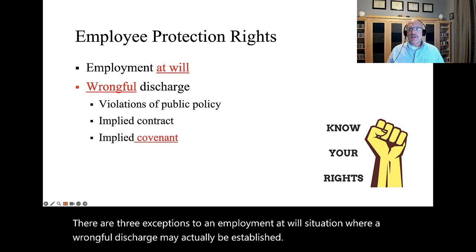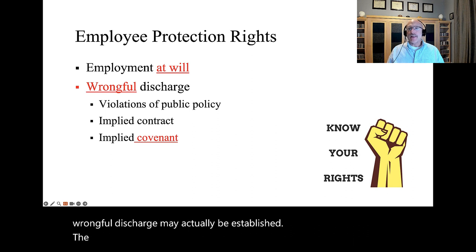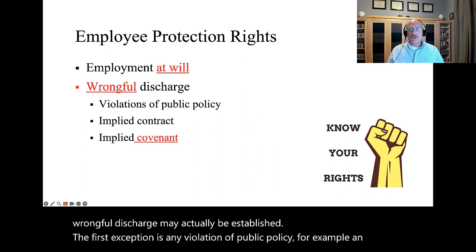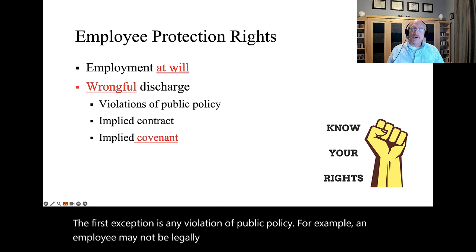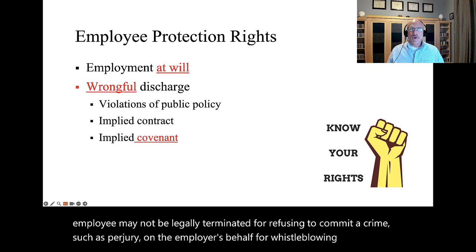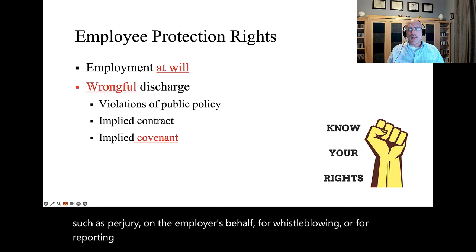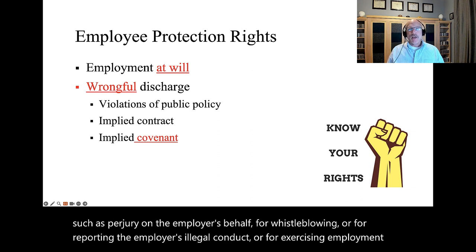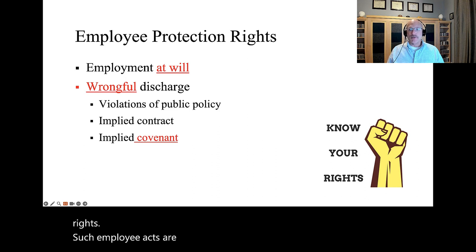The first exception is any violation of public policy. For example, an employee may not be legally terminated for refusing to commit a crime, such as perjury on the employer's behalf, for whistleblowing or for reporting the employer's illegal conduct, or for exercising employment rights. Such employee acts are protected by various laws in place.